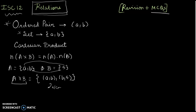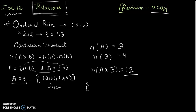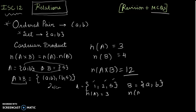How do we calculate it? For example, n(A) = 3 and n(B) = 4, so n(A×B) = 12. Let's take one more example: A = {1, 2, 5} and B = {a, b}. n(A) = 3 and n(B) = 2, so n(A×B) = 6. That is how you calculate the Cartesian product.